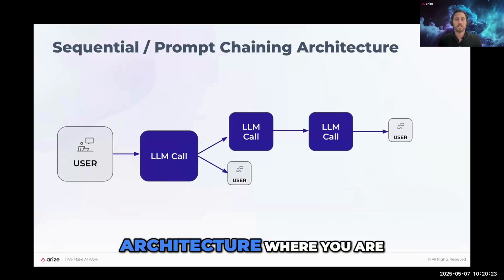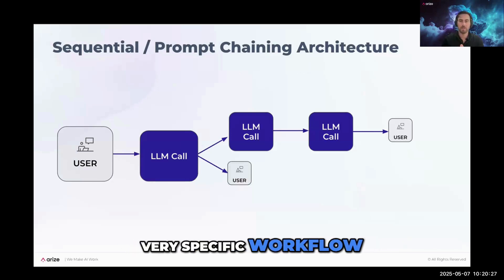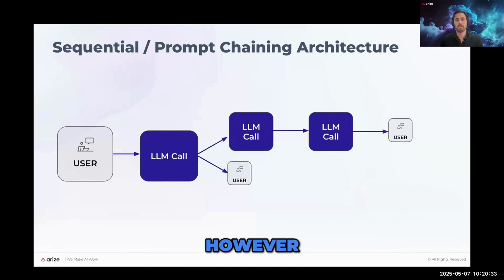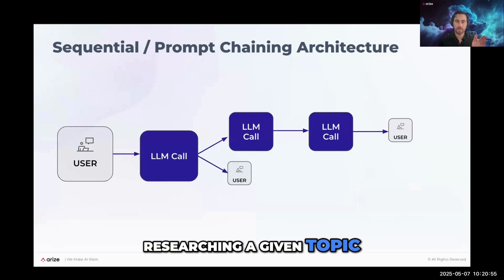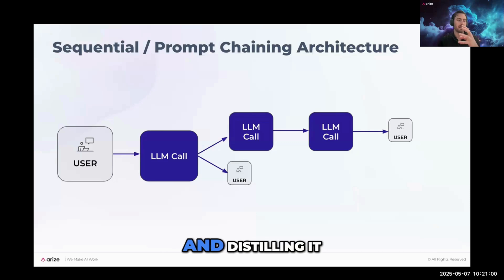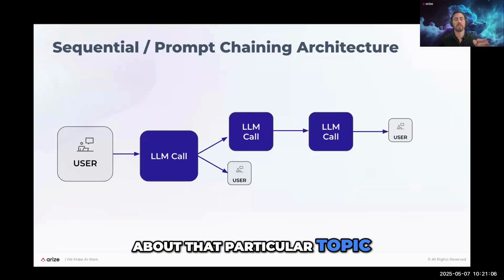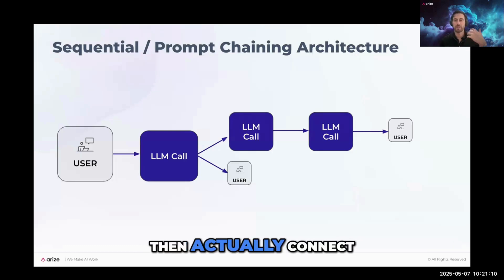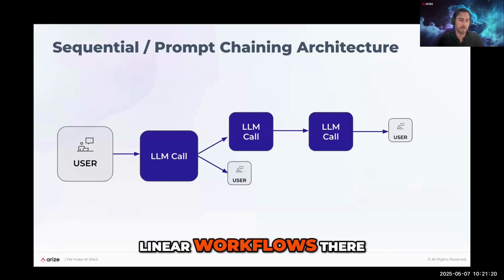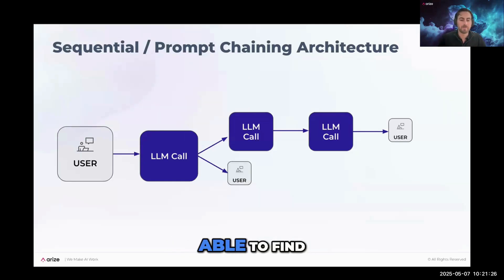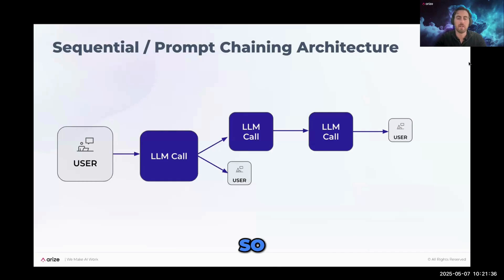Another pattern is the sequential or prompt chaining architecture, where you know in advance you'll go down a specific workflow with some straightforward decisions along the way. For example, a social media post agent might first research a topic, then distill that research into a post, then connect to APIs for X, Bluesky, and LinkedIn to publish the output — a clear linear chain of steps.